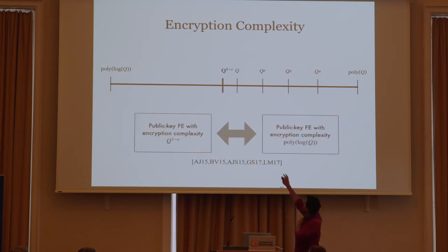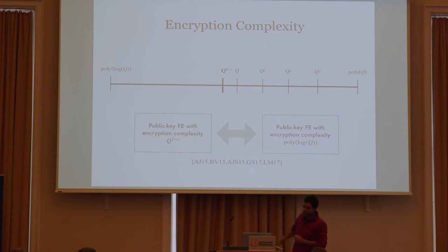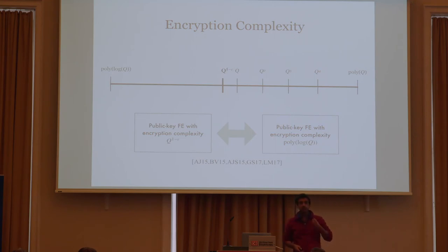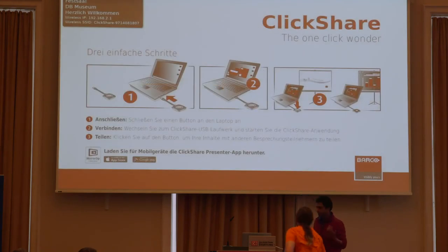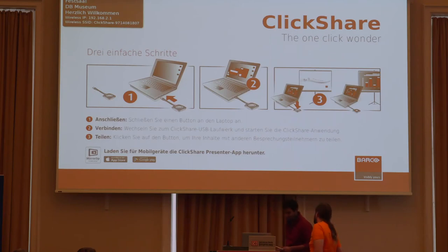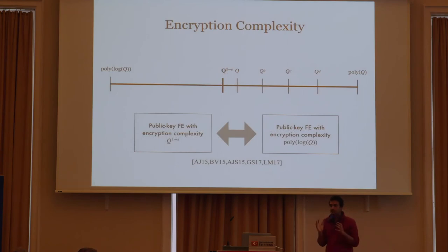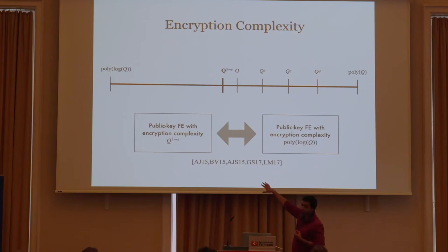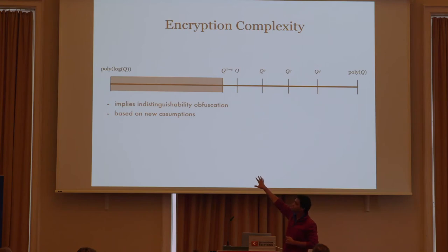There is a lot to be understood in the middle. Very recently, it was shown that if you have a public key FE scheme with encryption complexity that is sublinear in Q, then that is as powerful as FE schemes that grow polylogarithmic in Q — meaning an FE scheme with sublinear complexity already gives you a collusion-resistant FE scheme. So the entire left portion implies indistinguishability obfuscation, and we still don't know how to construct this from standard assumptions.